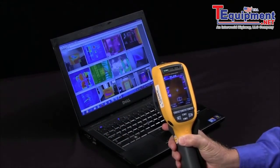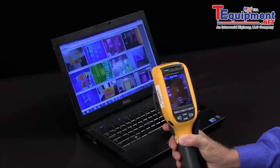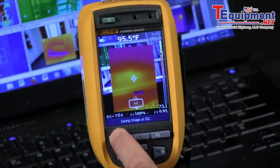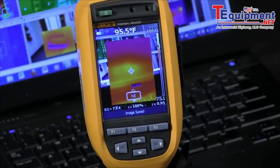How do I transfer an image from my Fluke Thermal Imager into the Smart View software? Well, first we take the image, hit the save key, and it will save it onto the SD card.